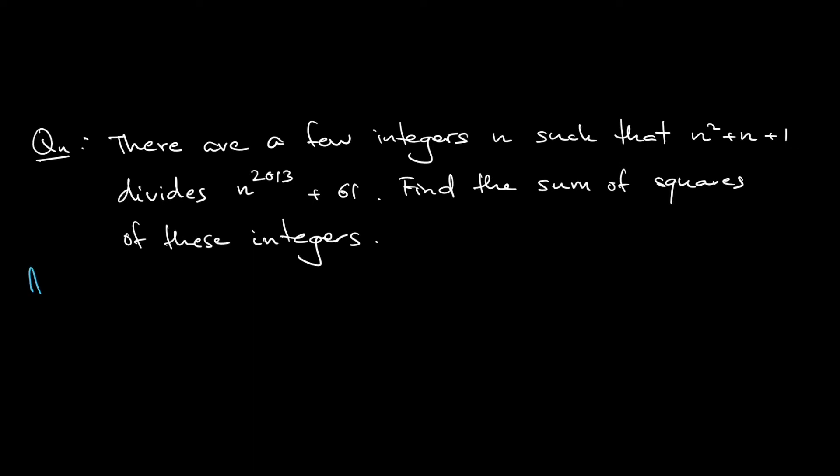Let's try to solve this number theory question together. So, you need n^2013 + 61 to be divisible by n² + n + 1.